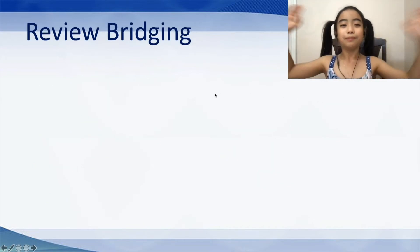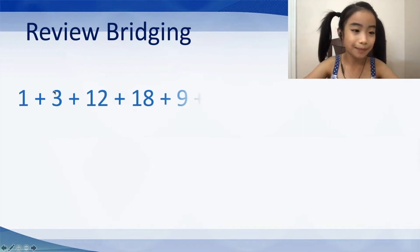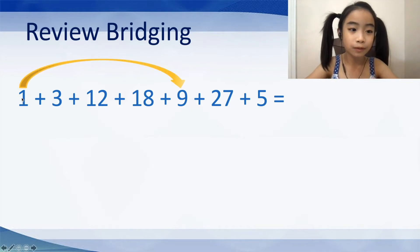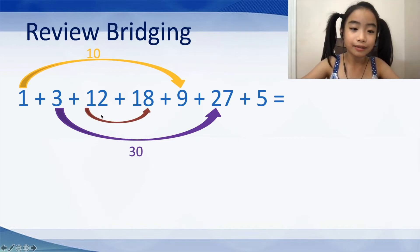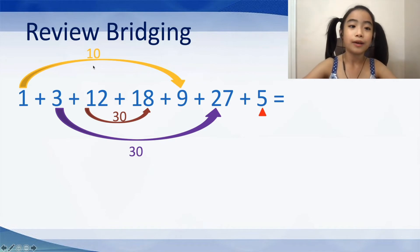Now, I will review bridging. So, bridging works with an equation that is all addition. For example, this equation, which is 1 plus 3 plus 12 plus 18 plus 9 plus 27 plus 5. Again, it's going to be super hard if you just went from left to right. So, let's use bridging. We have 1 and 9. They are best friends because they make 10. And now, we have 3 and 27, which equals 30. Then, we have 12 and 18, which equals 30 also. And, if you remember, what do we do with the 5? Well, it doesn't have a friend here. So, we mark it with a triangle underneath. We have 10 plus 30 plus 30 plus 5, which equals 75.